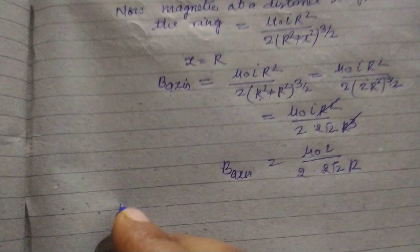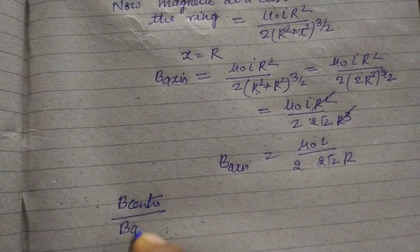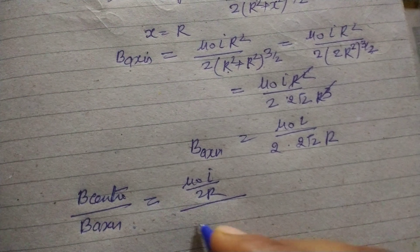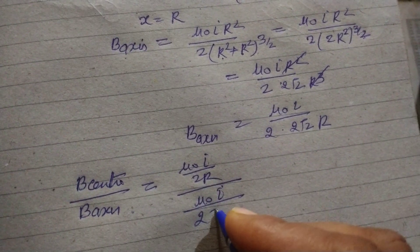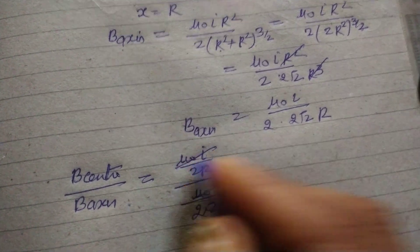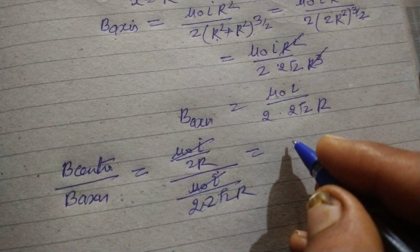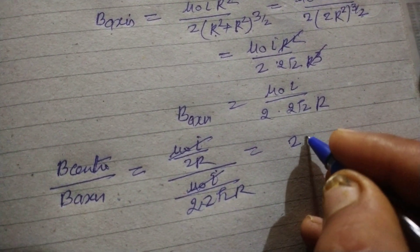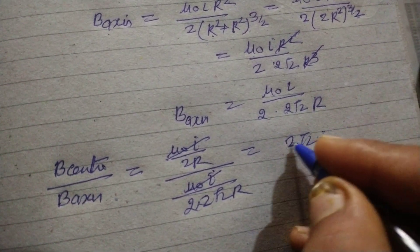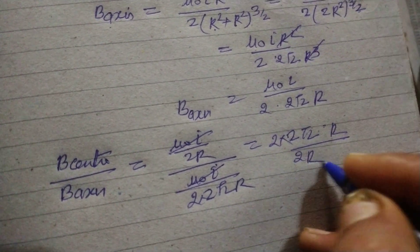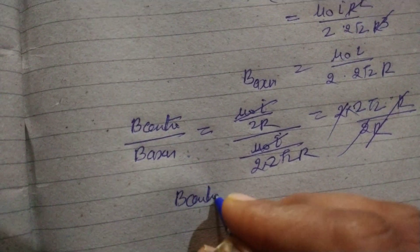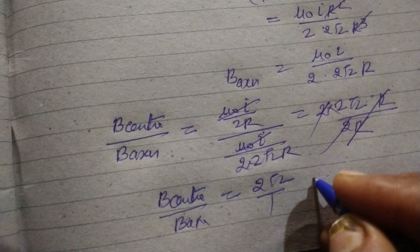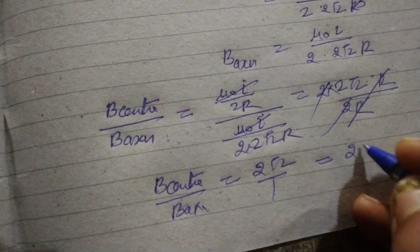Now B center upon B axis equals μ₀I upon 2R divided by μ₀I upon 2√2R. This cancels out, and this becomes 2√2 times 2R over 2R. So this cancels out. Therefore B center upon B axis equals 2√2 upon 1 or 2√2 ratio 1.